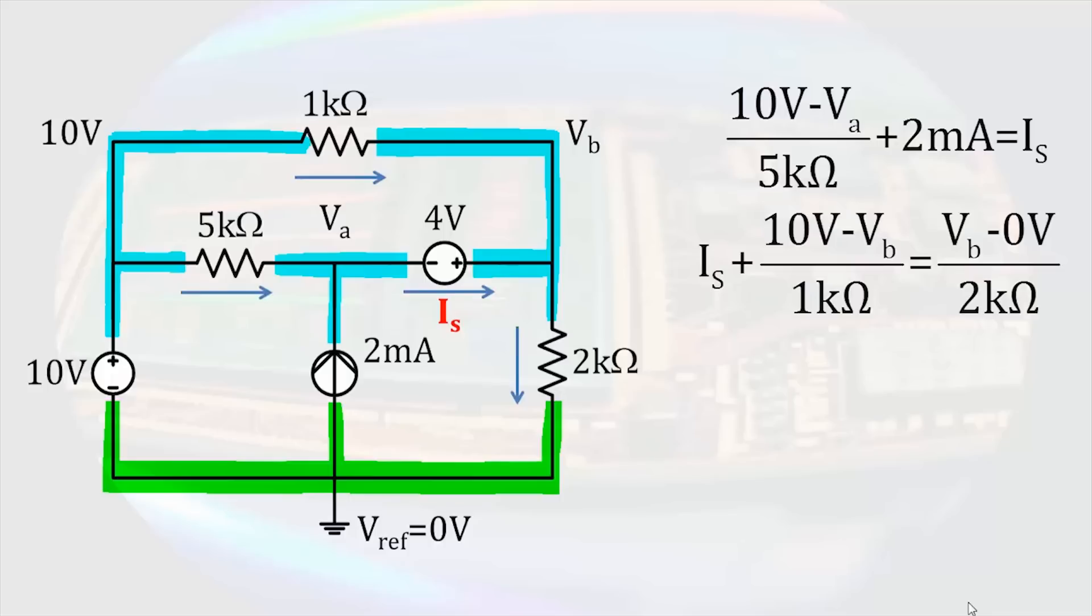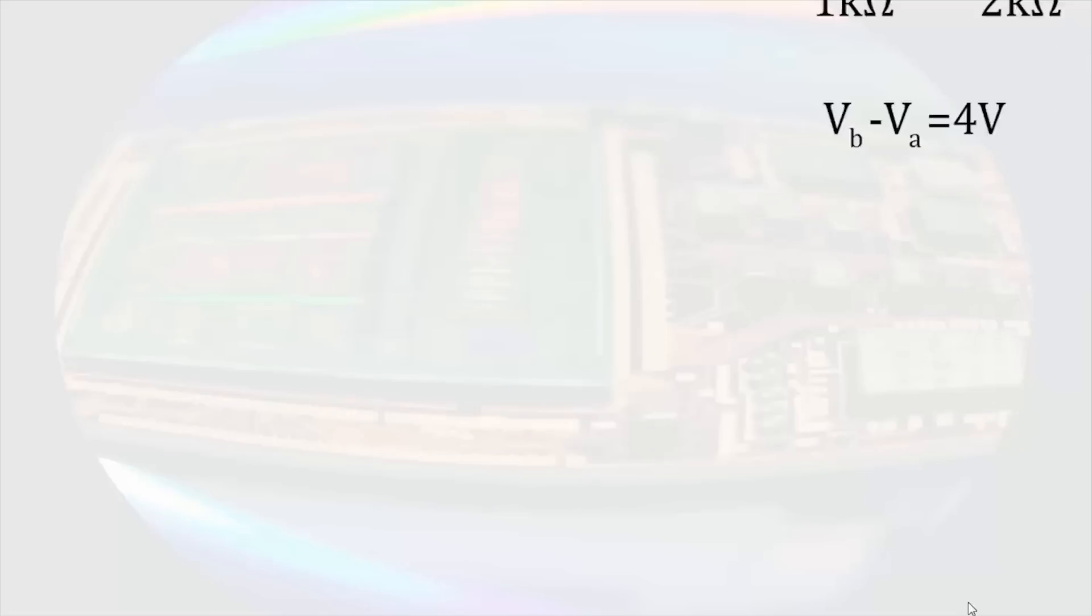A third equation can be obtained by noting the difference in electric potential between nodes A and B has to be equal to the value of the voltage source between them. Since the positive terminal of the voltage source connects to node B, we have VB minus VA equals 4 volts. With this set of equations that completely describes our system, we can use algebraic methods to solve for our unknowns.